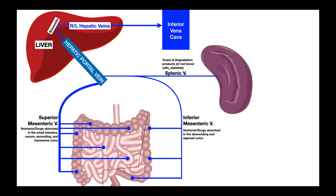But before we get into that, we need to have a basic understanding of how most of these drugs ultimately get distributed through the body. For the purpose of this video, we're going to consider a drug that's taken orally — that means by mouth. When the person swallows that drug, it's going to go through the esophagus and the stomach and ultimately end up going through the GI tract.